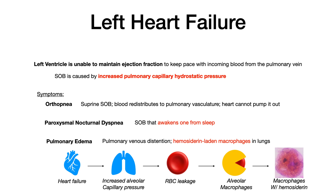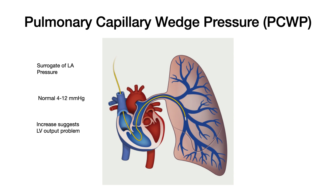That's left-sided heart failure. The big takeaway is that because the dysfunction is in the left ventricle, blood's not being ejected. Where does that blood go? It backs up into the pulmonary vasculature, so the patient has different findings and sequelae of shortness of breath. Now, something important to know for your test is pulmonary capillary wedge pressure, or PCWP. PCWP is essentially a surrogate of left atrial pressure. They literally put a catheter, wedge it into the pulmonary vasculature, and measure the pressure there.